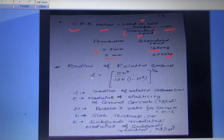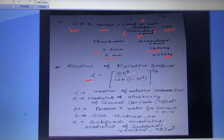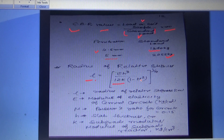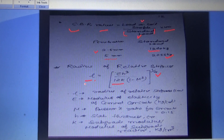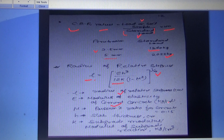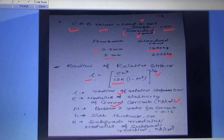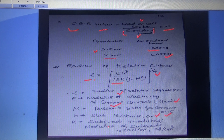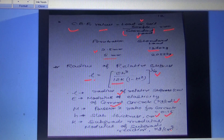The radius of relative stiffness L = [Eh³ / (12k(1 − μ²))]^(1/4), where E is the modulus of elasticity of cement concrete in kg/cm², μ is Poisson's ratio for concrete (0.15), h is the slab thickness in cm, and k is the modulus of subgrade reaction in kg/cm³.